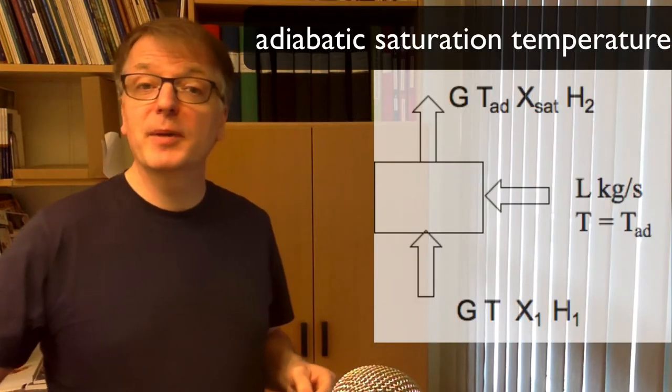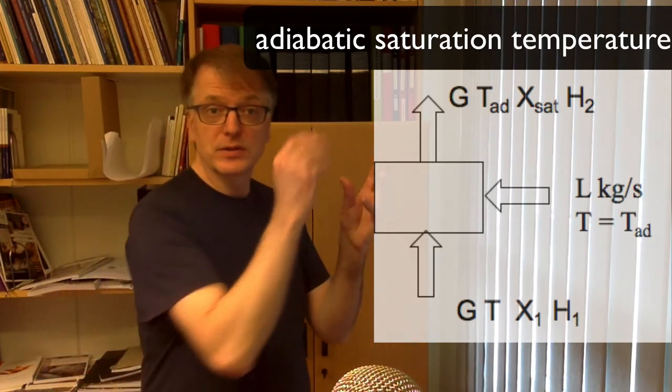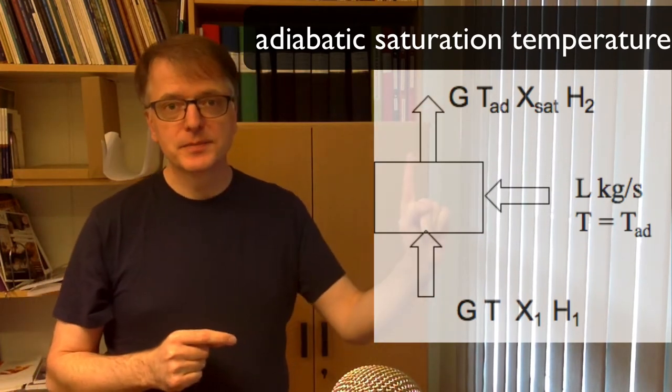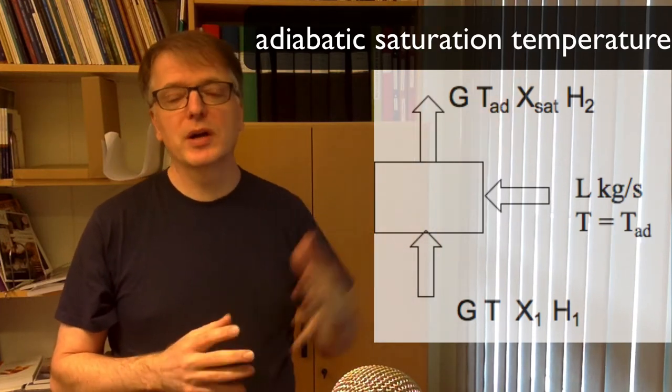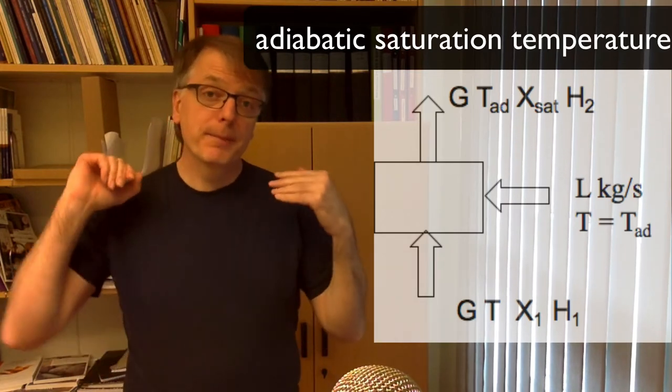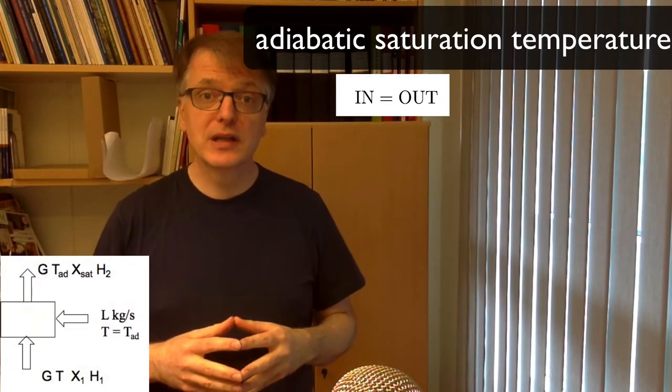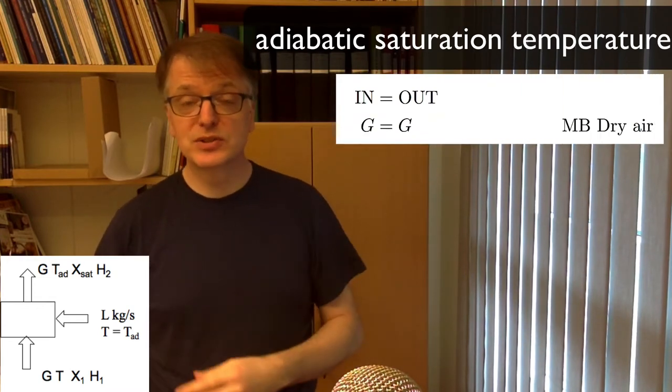What about the slope for the adiabatic saturation lines? Well, consider this mass balance here. You have air coming in and you have air coming out and then you have water coming in as liquid. To make a mass balance of air is really simple. You have air coming in and air going out, so G equals G, nothing happens.